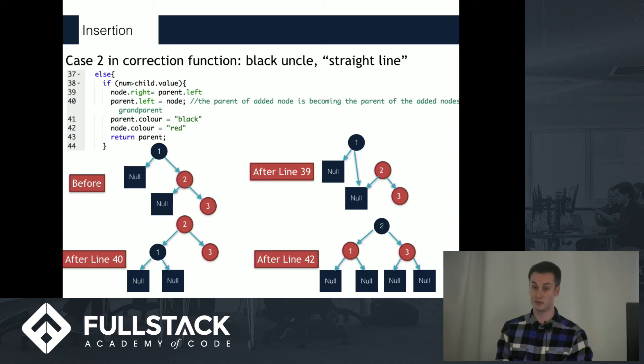So that's fairly complicated, but really what it's doing is another way of ensuring that we have no two red nodes in a row, and we have an equal number of black nodes along each branch.